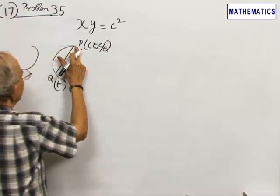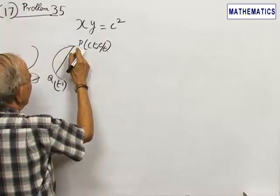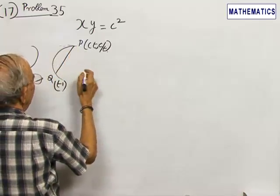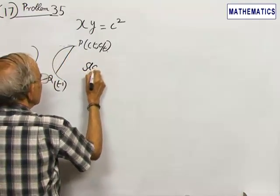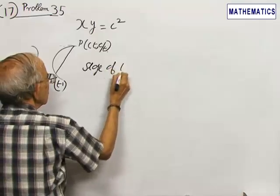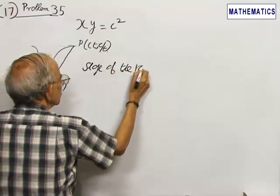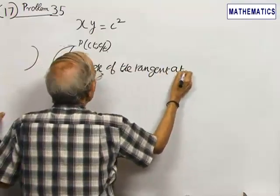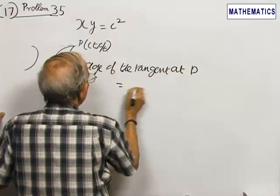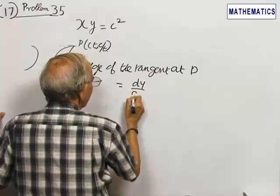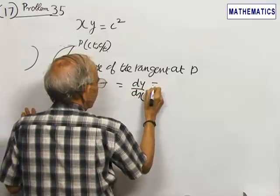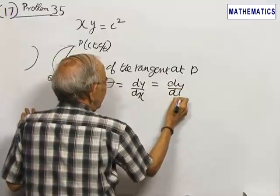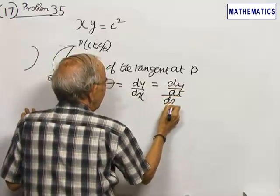The slope of the tangent at P is dy by dx, that is dy by dt divided by dx by dt.